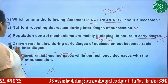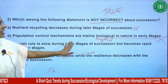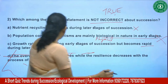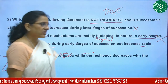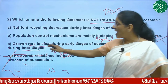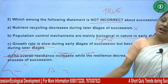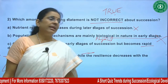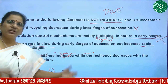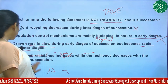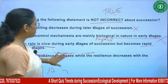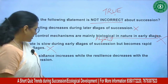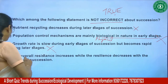Growth rate is actually high during early stages and becomes slow in later stages. Consider how large trees grow very slowly each year compared to small pioneer plants that quickly complete their life cycles. So the third statement is also false.